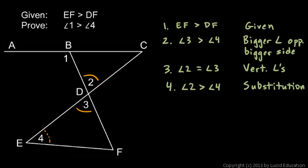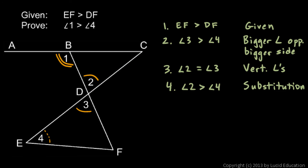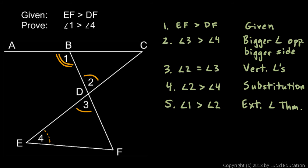Then I said that angle 1 is an exterior angle of this triangle, so it has to be bigger than angle 2. Step 5: angle 1 is greater than angle 2. The reason is the exterior angle theorem — an exterior angle of a triangle is greater than either remote interior angle. So angle 1 has to be bigger than angle 2.